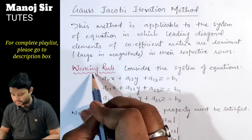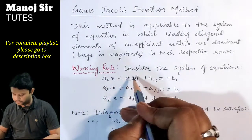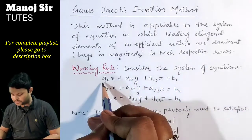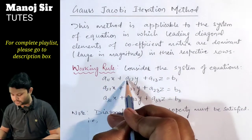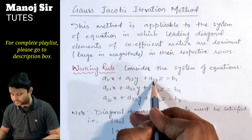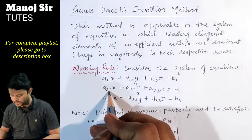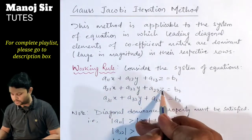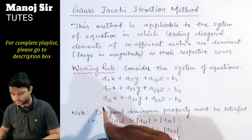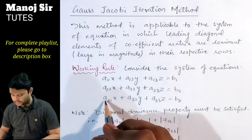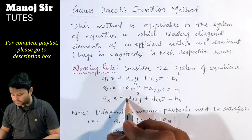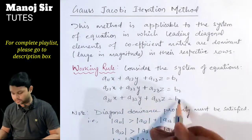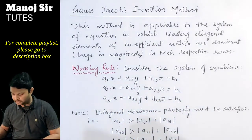Now we will discuss the working rule. Consider the system of equations: a11·x + a12·y + a13·z = b1; a21·x + a22·y + a23·z = b2; and a31·x + a32·y + a33·z = b3.